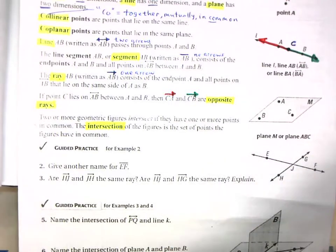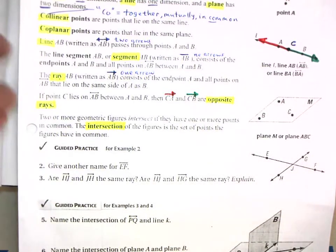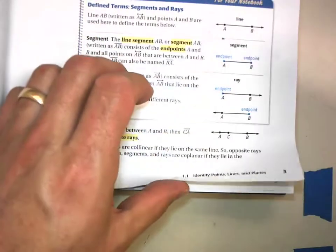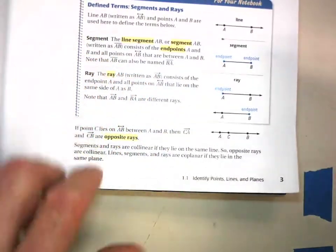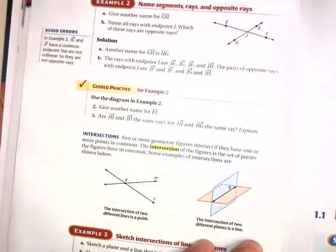Opposite directions. So those are opposite rays. Okay, let's do example two and get this thing done.